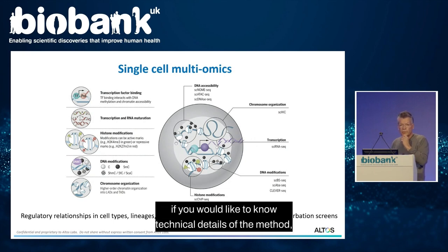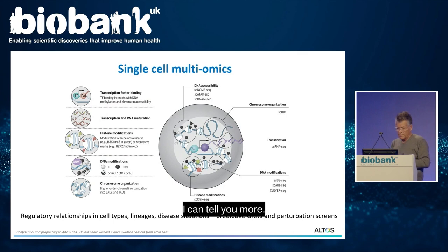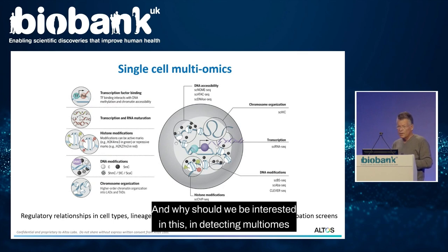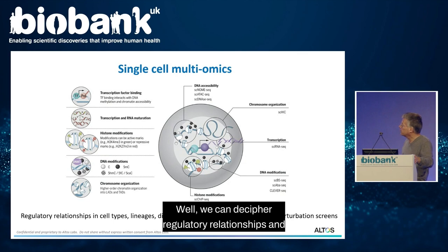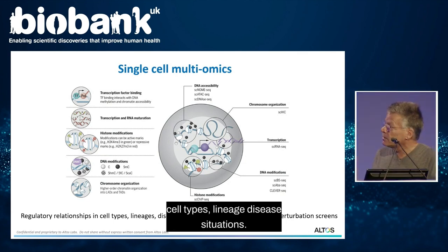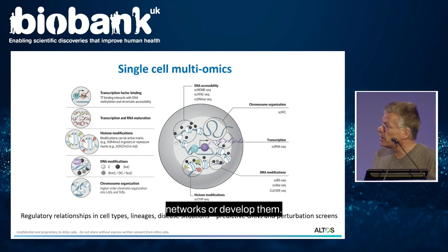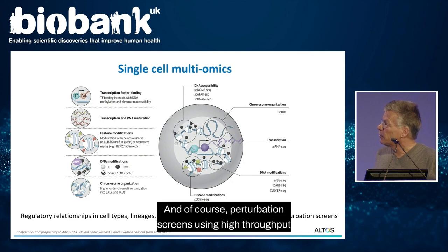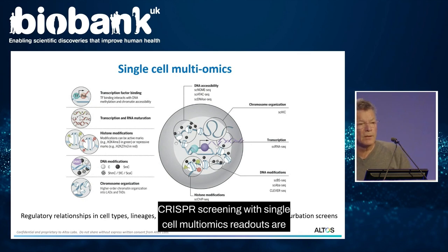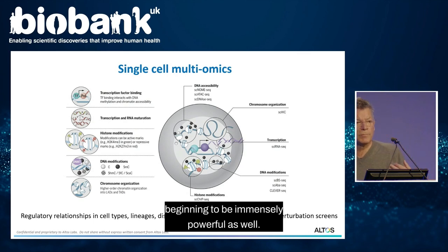I can tell you more technical details of NMT-seq if you'd like. Why should we be interested in detecting multi-omics in single cells? We can decipher regulatory relationships, cell types, lineages, and disease situations. We can now begin to produce predictive gene regulatory networks, and perturbation screens using high-throughput CRISPR screening with single-cell multi-omics readouts are beginning to be immensely powerful.